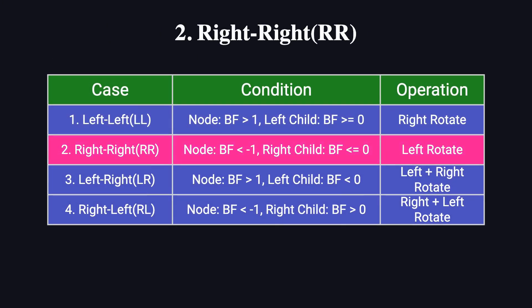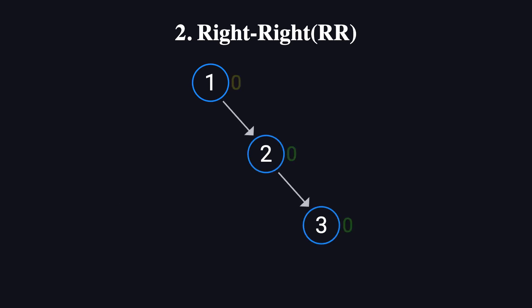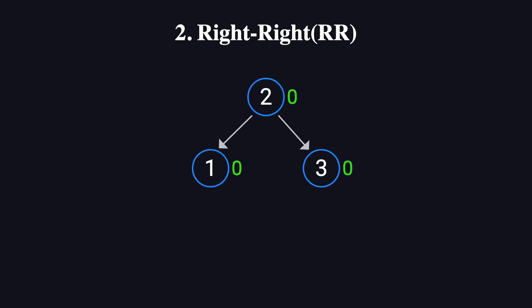Now let's move on to the second case: RR, or right-right. This is essentially the mirror image of the LL case. The conditions and rotation logic are symmetric but in the opposite direction. For instance, if we insert the values 1, 2, and 3 sequentially, the tree becomes unbalanced because the right subtree grows too tall. To restore balance, we perform a left rotation. We rotate node 1 downward to the left, making node 2 the new root. Now node 1 becomes the left child of node 2, and node 3 remains the right child of node 2. After the rotation, the tree is balanced again.